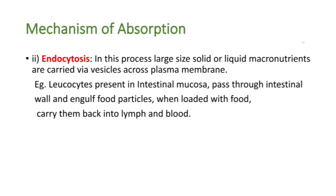Lastly, endocytosis: in this process, large-size solid or liquid macronutrients are carried by vesicles across the plasma membrane. For example, leucocytes present in the intestinal mucosa pass through the intestinal wall and engulf the food particles. When loaded with food, they carry them back into blood and lymph.